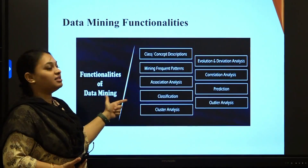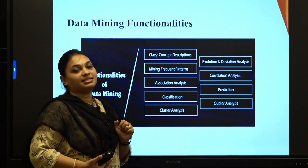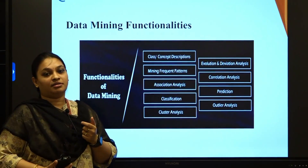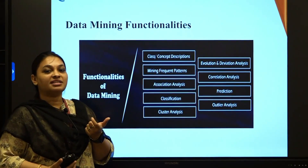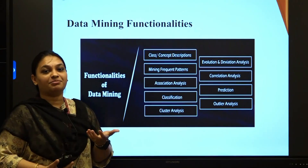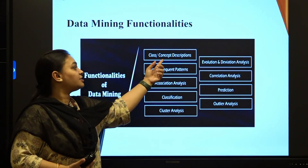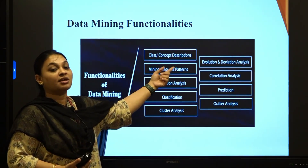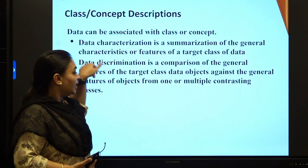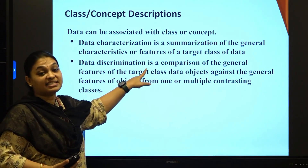This is an important concept in data mining. First let us start with class or concept descriptions. What do we mean by a description? Description is nothing but defining something — defining a class, talking about a concept. That is your class or concept descriptions. Here, class or concept descriptions has two types: one is data characterization, and the second one is data discrimination.